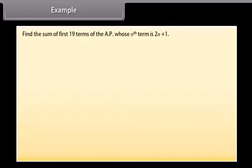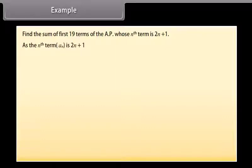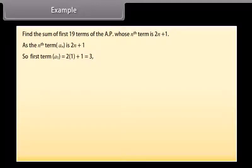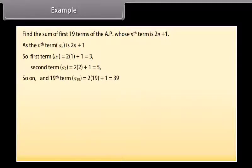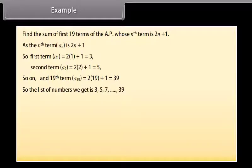Find the sum of the first 19 terms of the AP whose Nth term is 2N plus 1. Since the Nth term AN equals 2N plus 1, the first term A1 equals 2 times 1 plus 1 equals 3. The second term A2 equals 2 times 2 plus 1 equals 5, and so on. The 19th term equals 2 times 19 plus 1 equals 39. So the list of numbers is 3, 5, 7, ..., 39.